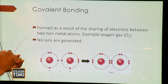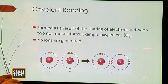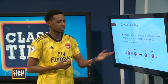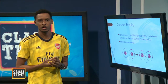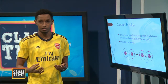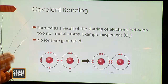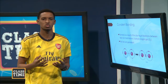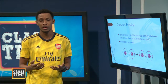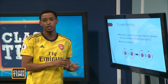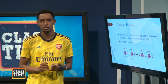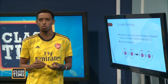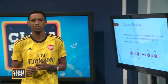A covalent bond is the sharing of electrons between two non-metal atoms. If we look at molecular oxygen, we see two shared pairs of electrons, which constitutes a double bond. The first bond in the double bond is called a sigma bond, and the second is a pi bond. It's also important to note that with covalently bonded compounds, there are no ions generated in solution. Thus, unlike ionic compounds, covalent compounds generally can't conduct electricity and usually tend to have low melting and boiling points.